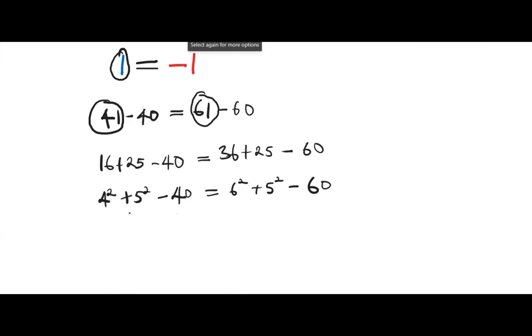Let's proceed further. We can go ahead and write 4 squared plus 5 squared minus, instead of 40, we can write 2 times 4 times 5. 2 times 4 times 5 is 40, equals to 6 squared plus 5 squared minus 2 times 6 times 5. 6 times 5 is 30 and 30 times 2 equals to 60.